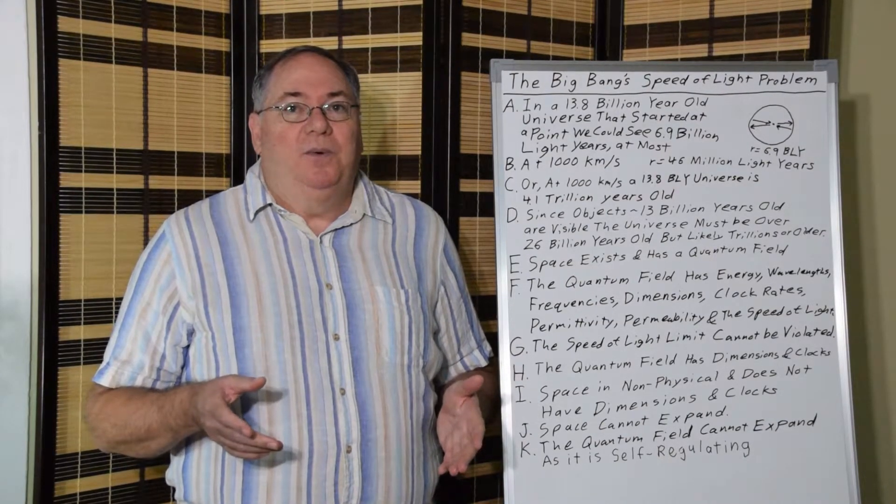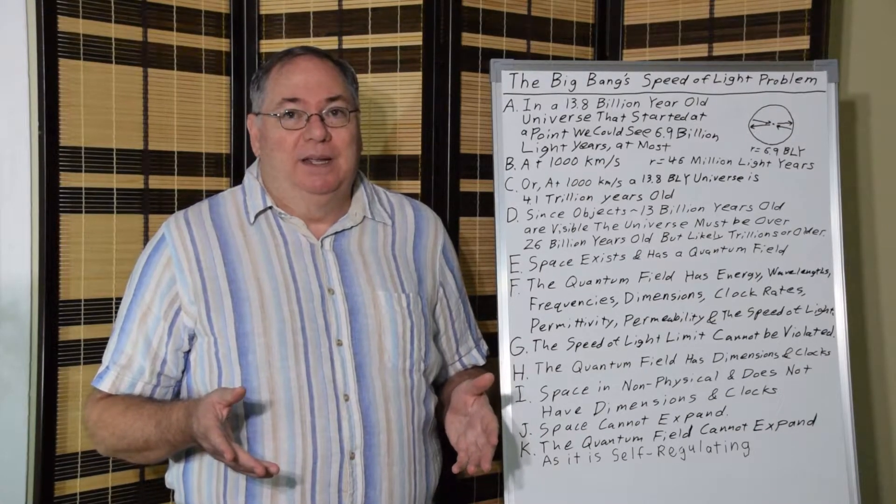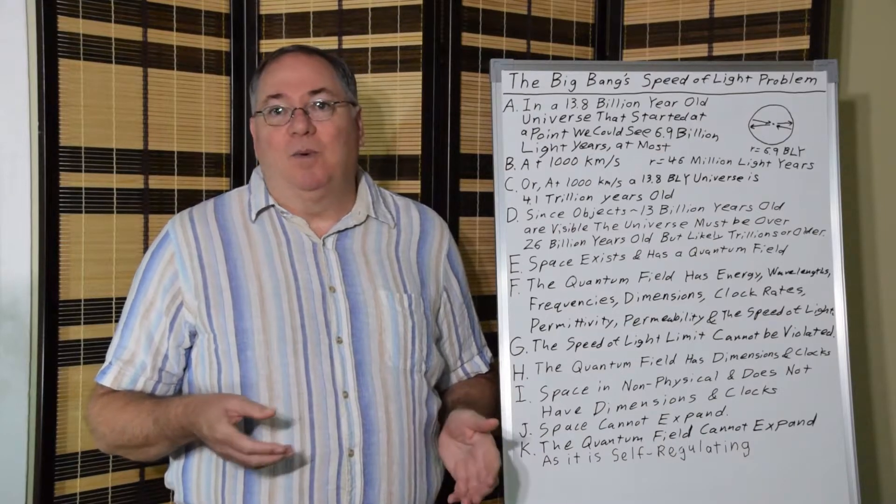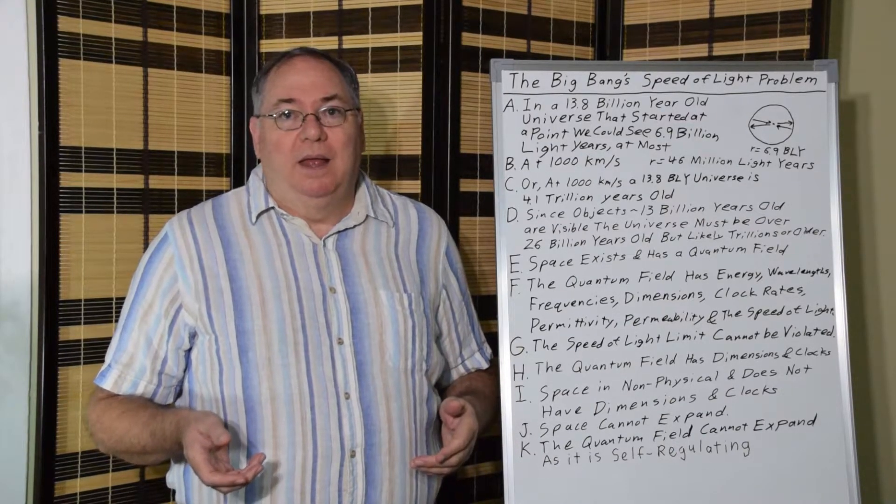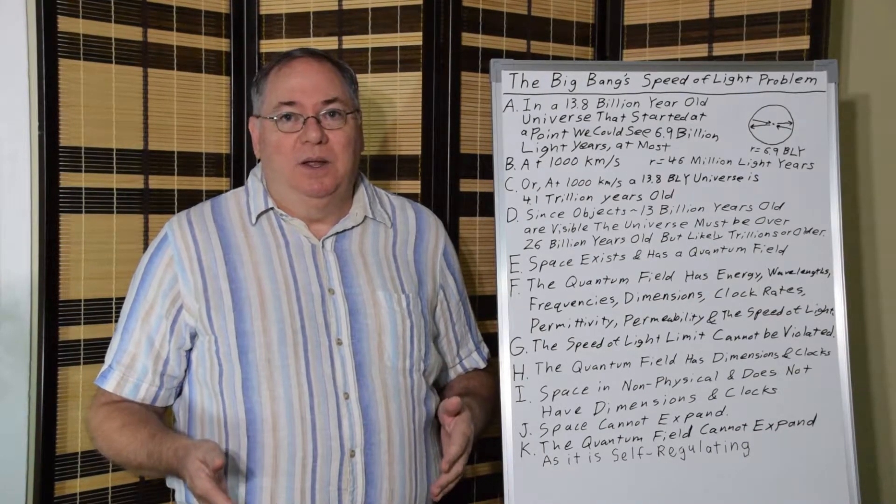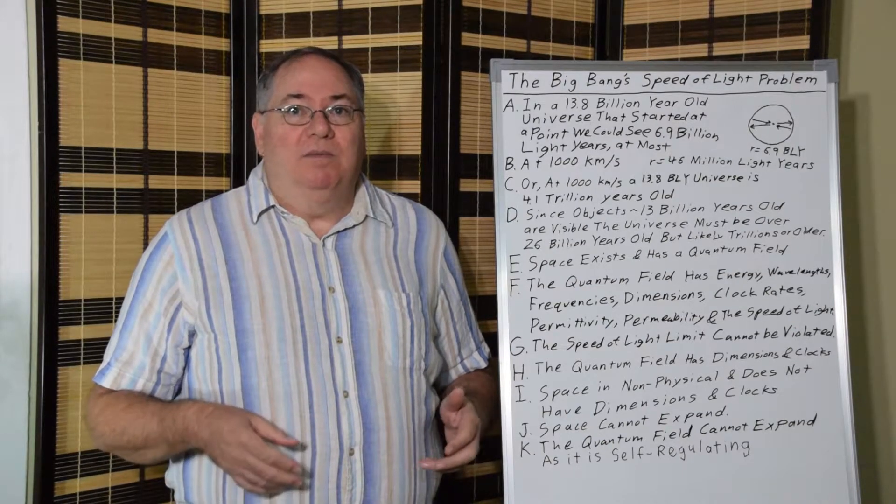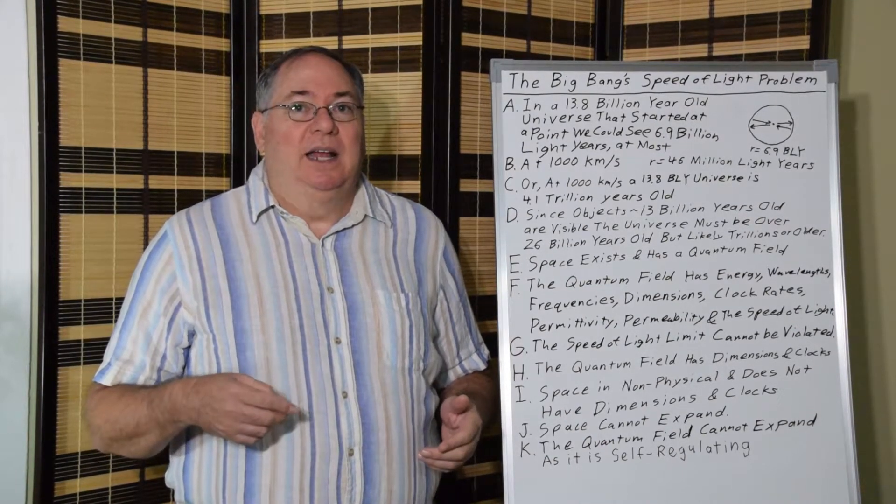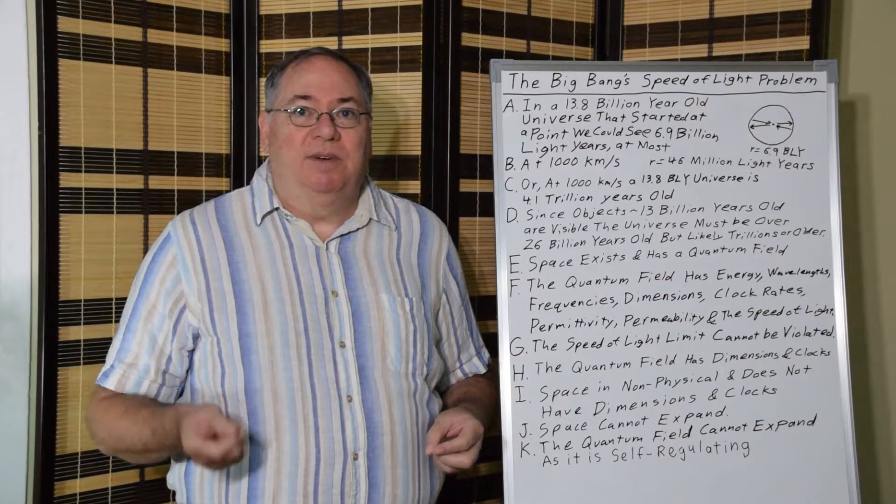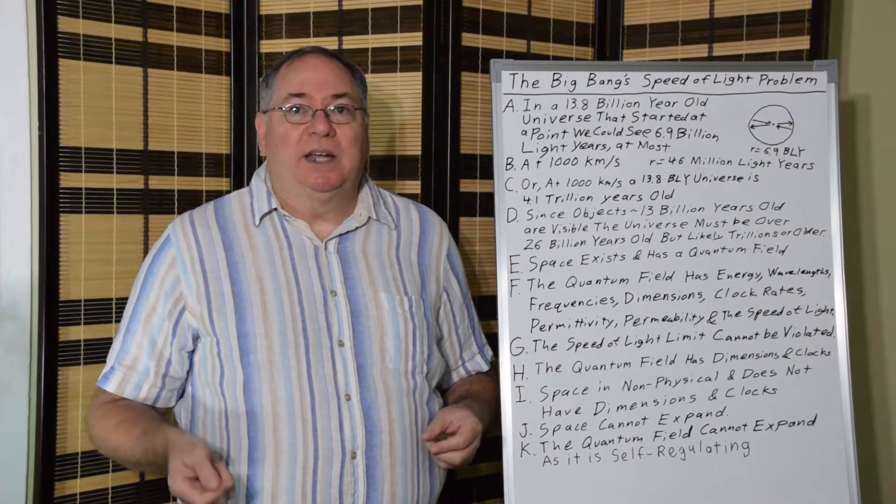Now, the reason we know that we have a speed of light limit problem is because space exists and space contains a quantum field. All real space that we know contains a quantum field, which is composed of quantum fluctuations. Quantum fluctuations have energy. Quantum fluctuations have wavelength. Quantum fluctuations have frequencies.